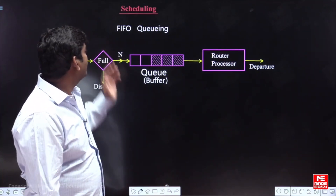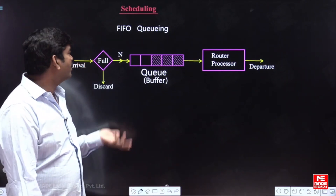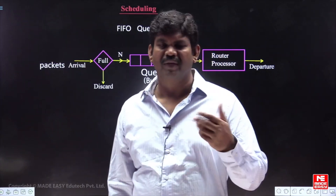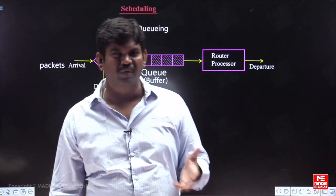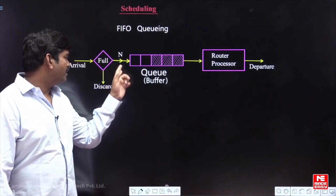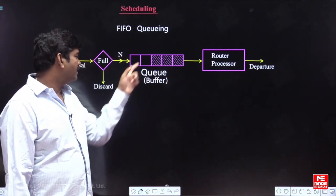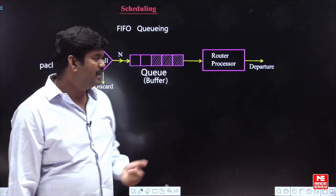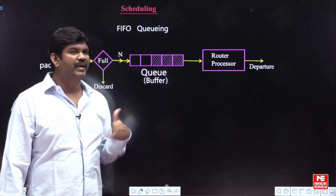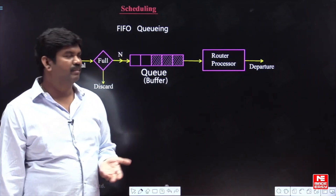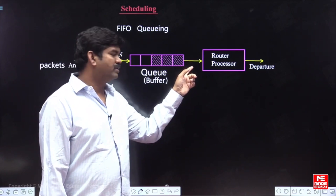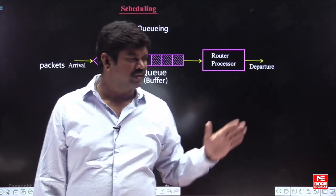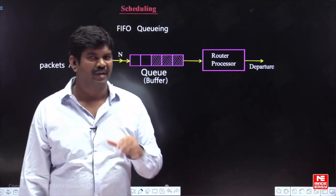So this is one scheduling algorithm called FIFO queuing. What is the drawback? If the applications coming from the application layer are FTP or SMTP, if some delay is happening there will not be any issue. Because when all the packets are moving serially, the main drawback is that the ending packets will have more waiting time or queuing delay. Starting packets can be forwarded quickly but ending packets' waiting time will be more. So for SMTP or FTP, if delay is more, there is no issue.